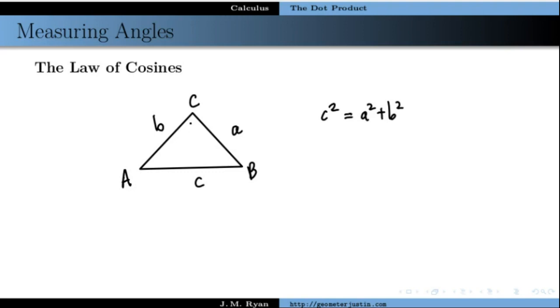And this angle looks like it maybe could be a right angle, but if this is not a right angle then we need to adjust. And the law of cosines tells us how to do that. What we have to do is subtract 2ab, so the lengths of these sides, times the cosine of the angle C.